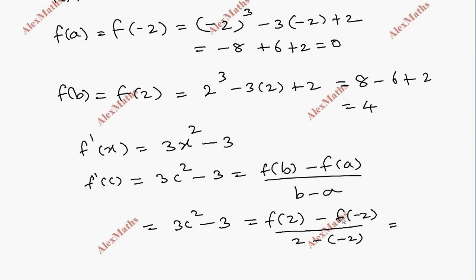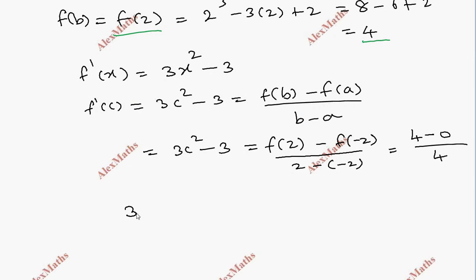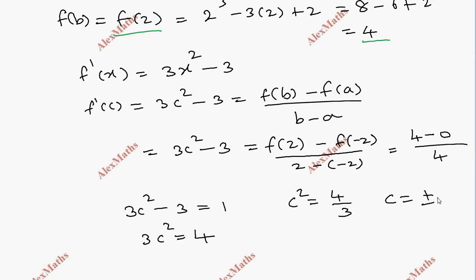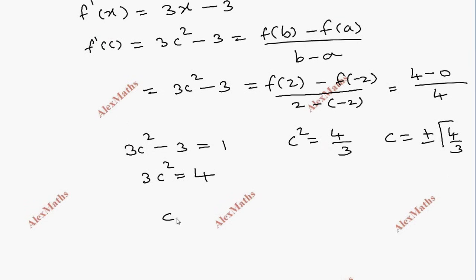Substituting the values: f(2) = 4 and f(-2) = 0. So [f(2) - f(-2)] / [2 - (-2)] = 4/4 = 1. Now f'(x) = 3x² - 3, so f'(c) = 3c² - 3 = 1. Therefore c² = 4/3, giving c = ±2/√3.